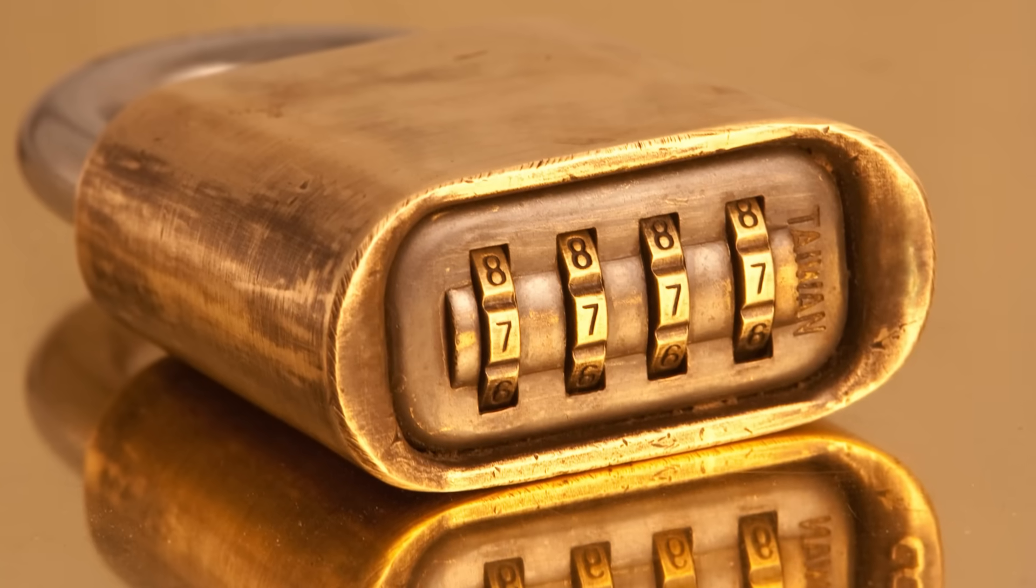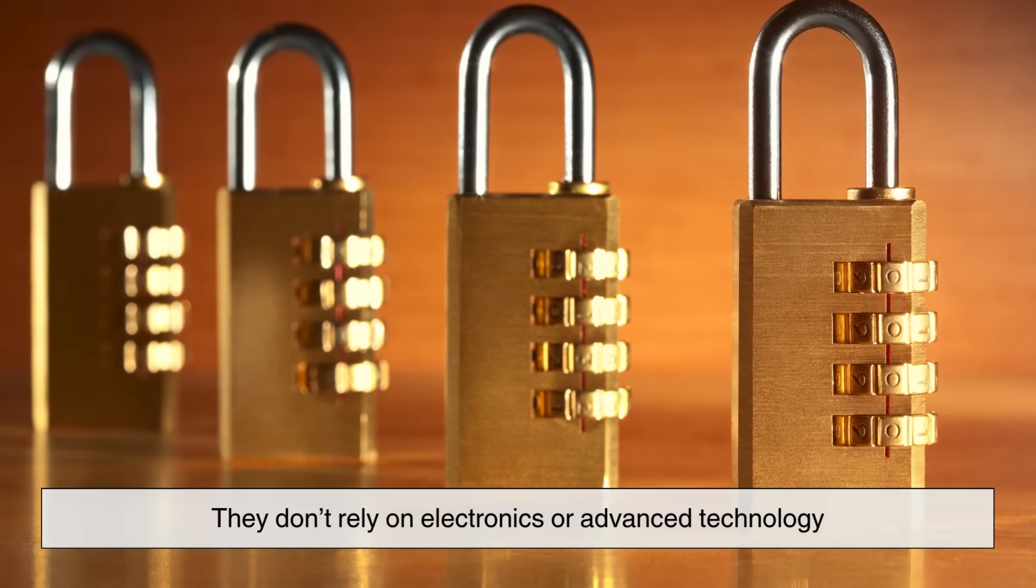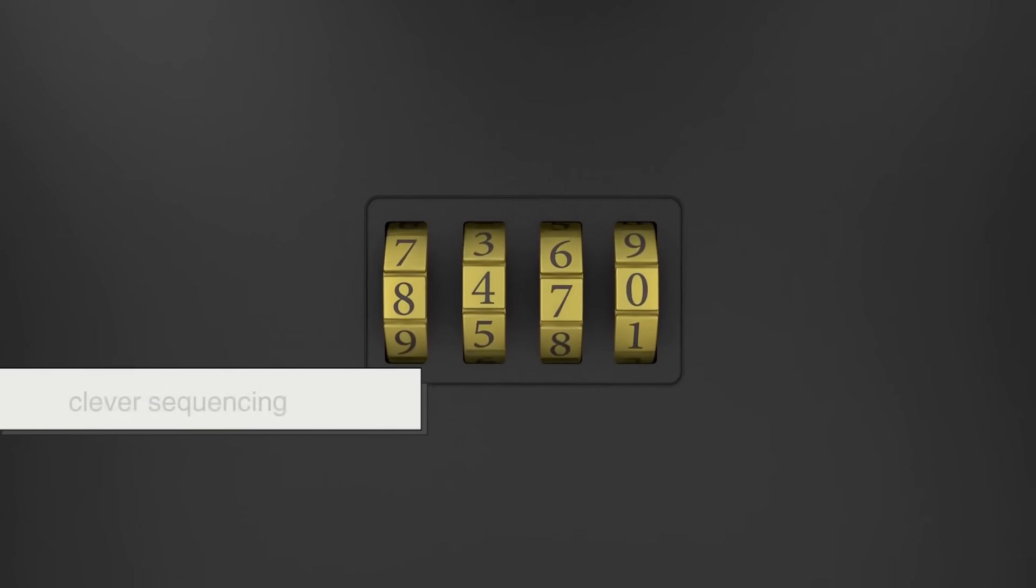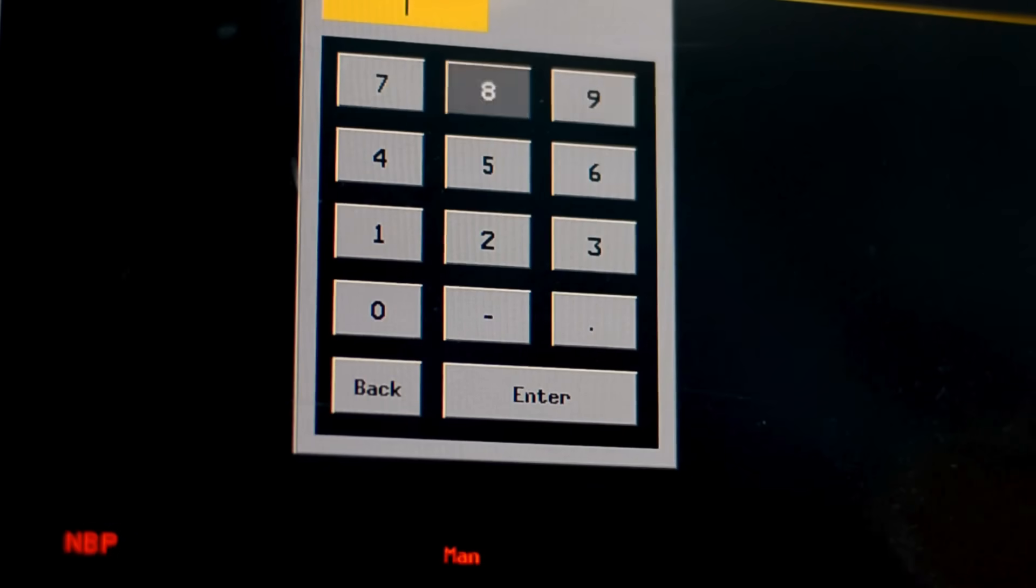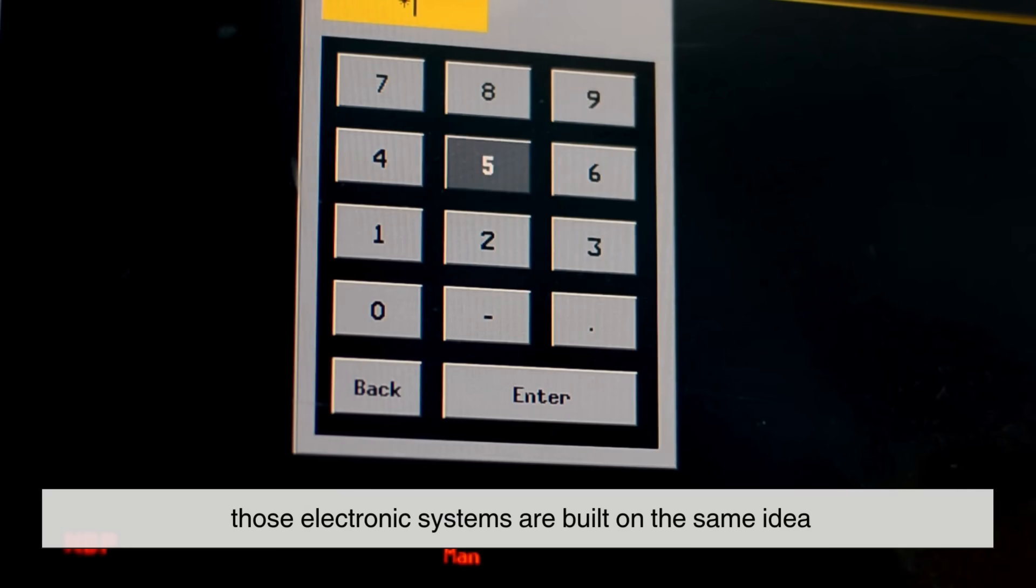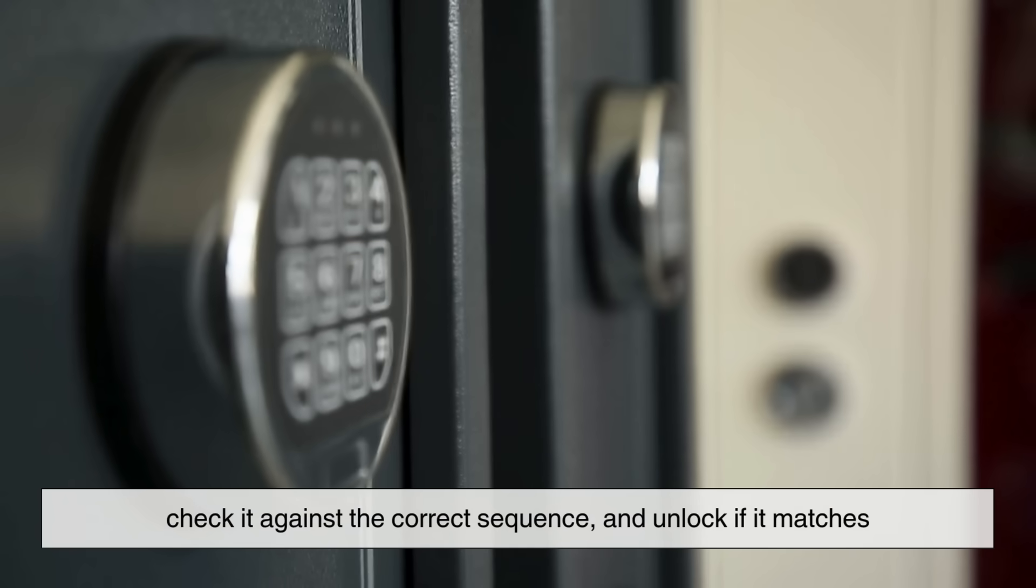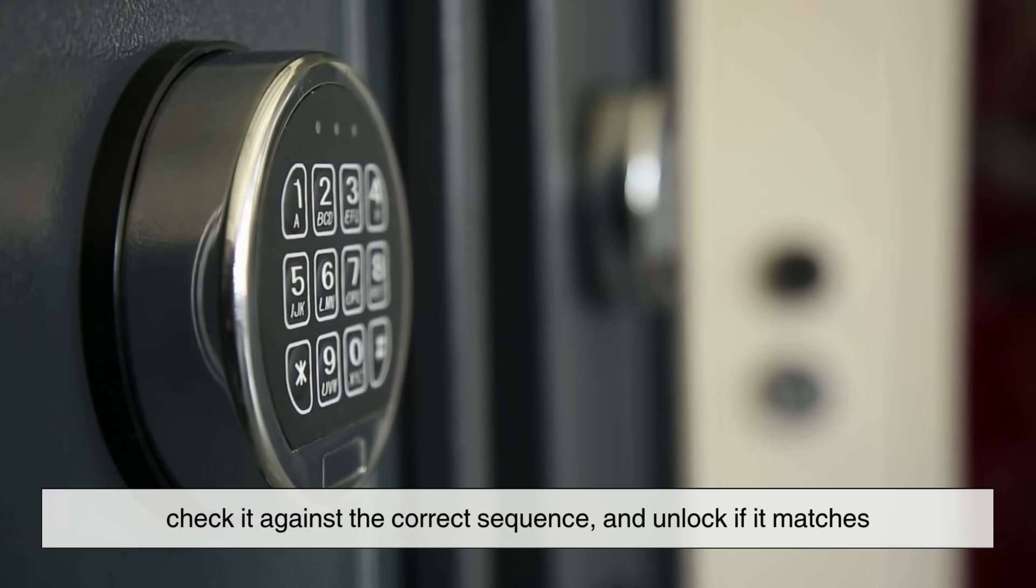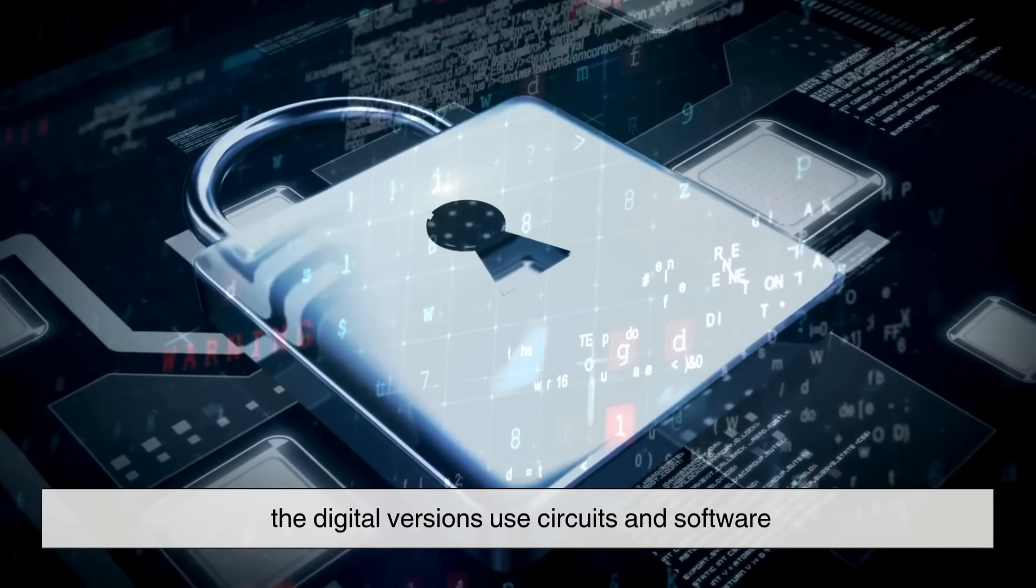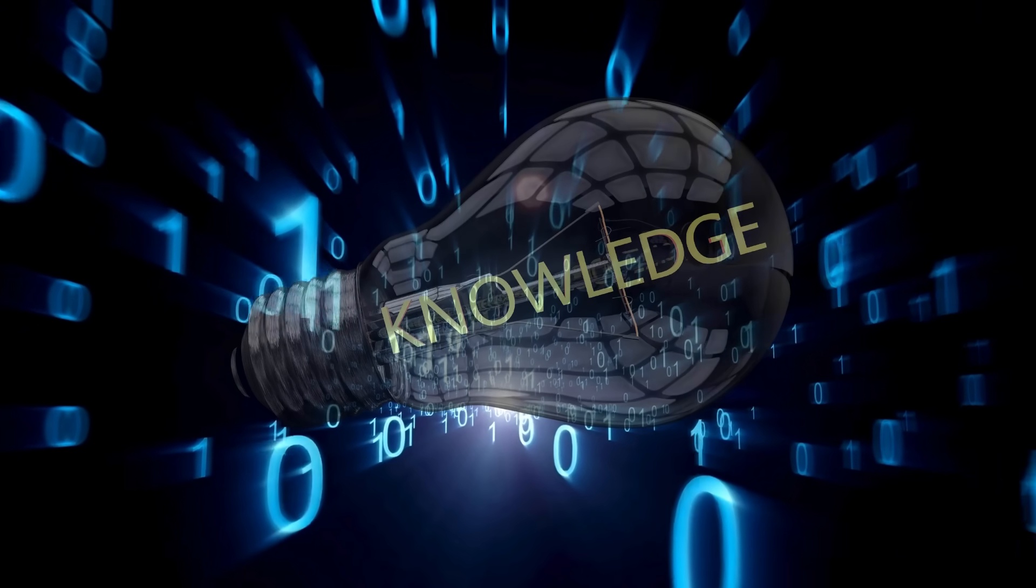Combination locks are a great example of how everyday objects hide smart engineering in plain sight. They don't rely on electronics or advanced technology. They rely on mechanical precision and clever sequencing. And even though digital keypads and smart locks are becoming more popular today, those electronic systems are built on the same idea. Input a code, check it against the correct sequence, and unlock if it matches. The difference is that instead of wheels and notches, the digital versions use circuits and software. But the concept, security through knowledge of the right code, remains the same.